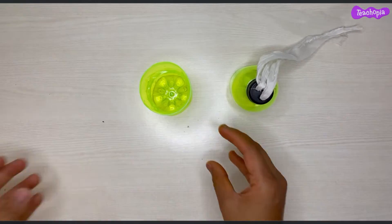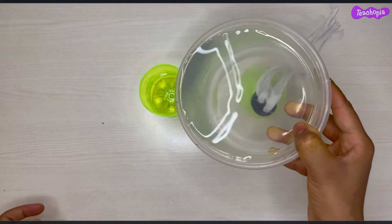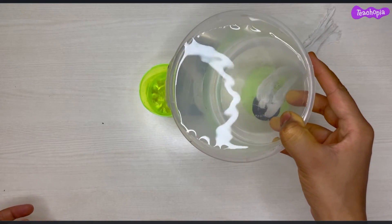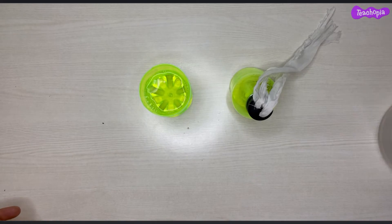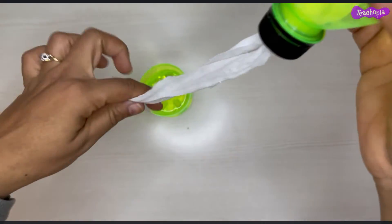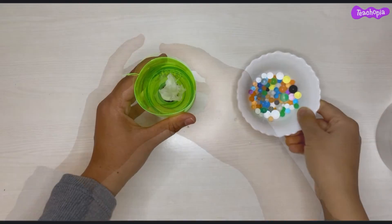Take the bigger portion of the bottle and fill three-fourths of it with water. Now, take the smaller portion of the bottle and place it on top of the bigger portion so that the cloth strips are immersed inside the water.